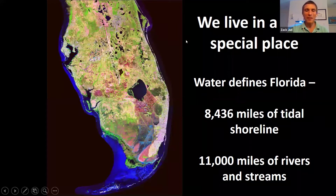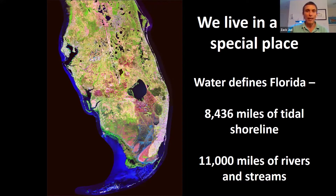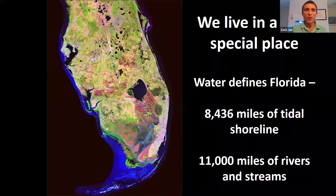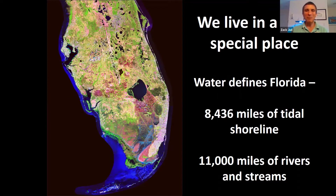I don't think I have to convince any of you that we live in a really special place, especially if you love the water — whether you're a boater, an angler, a paddleboarder, a scuba diver, or just like spending time around water, Florida's the place to be. Water really defines our state: over 8,000 miles of tidal shoreline, 11,000 miles of rivers and streams. We have more coastline than any other state except Alaska. I'd say we have the most swimmable miles of coastline anywhere in the U.S.